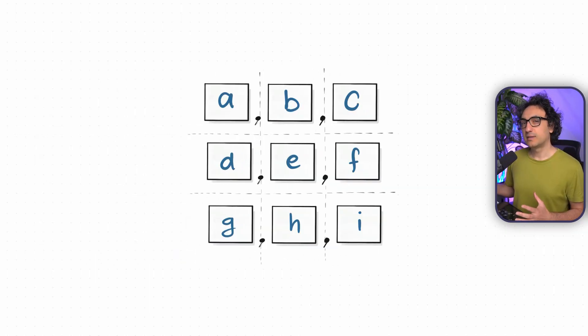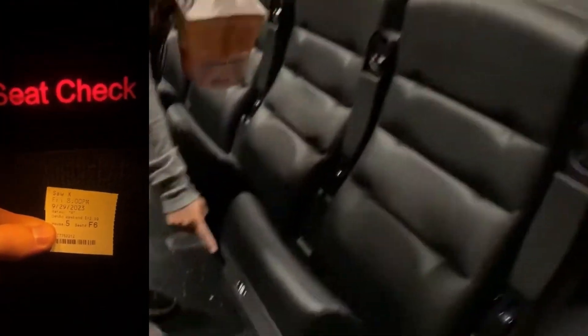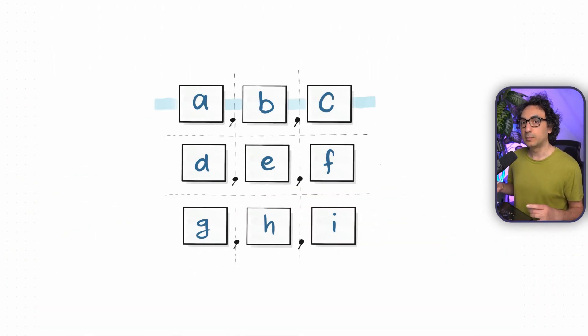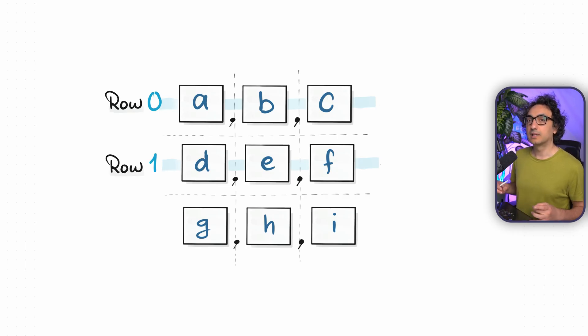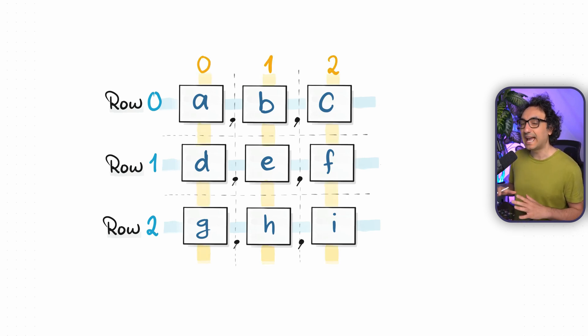Now let's talk about how to access and read a matrix — three lists inside one big list. Think of it like going to the cinema and finding your seat. Your ticket has two numbers: the row number and the seat number. First you find your row, then you check your seat. In Python, the first row is row zero, the second is one, and the third is two. For columns, items are also numbered zero, one, two.